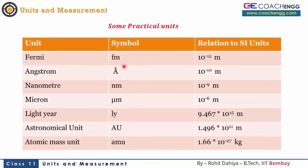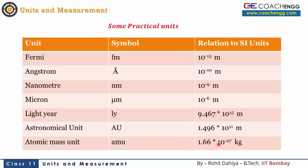Let us see some practical units. These are units which help you with a lot of questions. Fermi is the unit for the size of the nucleus — distances of this order appear in modern physics and atomic structure. The size of an electron shell is of the order of angstroms. Similarly, nanometer, micrometer, and light year — the distance traveled by light in one year — are important. The astronomical unit is the distance between Earth and the Sun: 1.5 × 10¹¹ meters. One atomic mass unit (AMU or U) is approximately 1.67 × 10⁻²⁷ kg, which is the mass of a proton. You should remember these conversion factors.